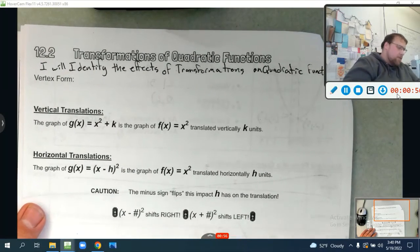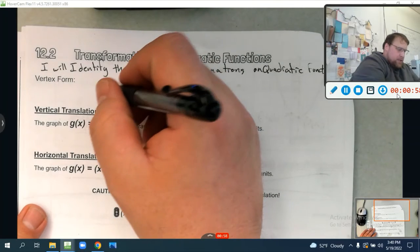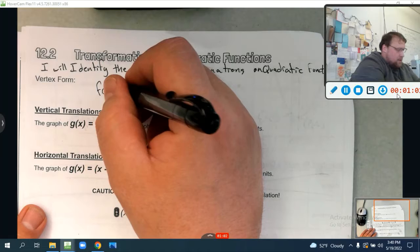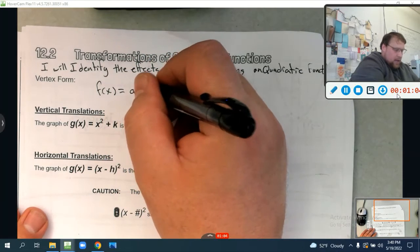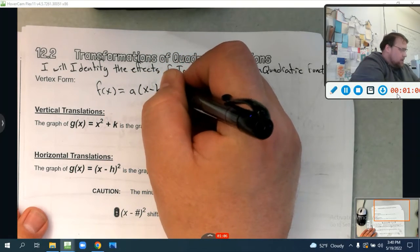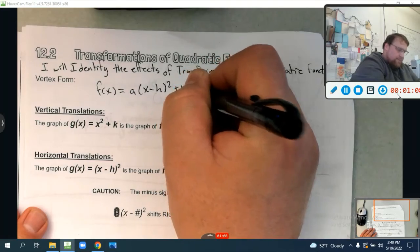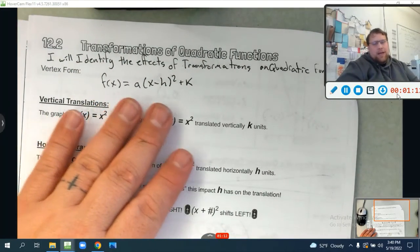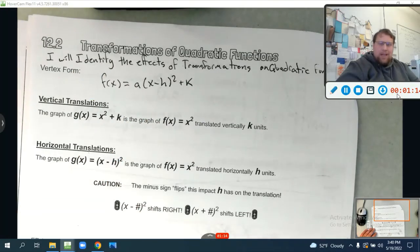We're going to introduce today vertex form, which is simply just a quadratic function in the form of f(x) equals a times (x minus h) squared plus k. And before we talk too much about it, it's actually cool because it has your vertex right in it. We'll talk about that later though.